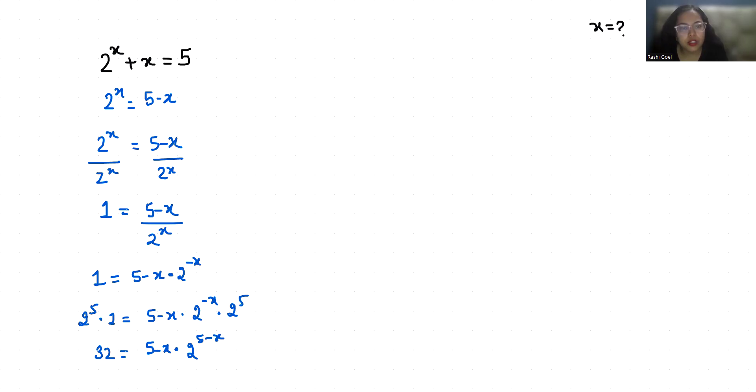Now, I am using Lambert W function, which is defined as W(A)e^(W(A)) = A. I am going to convert our equation into this form. 32 equals (5 - x) times e^(ln 2 times (5-x)), since e^(ln A) equals A.